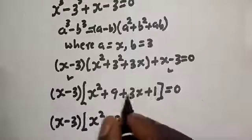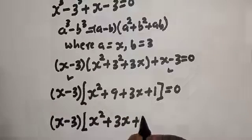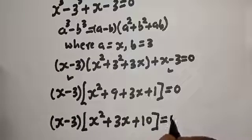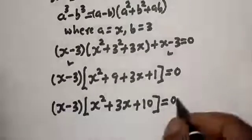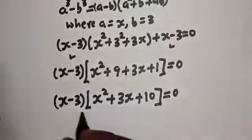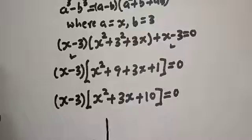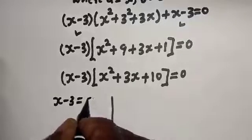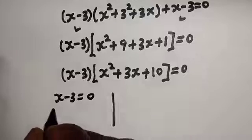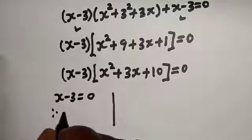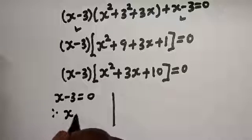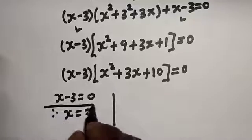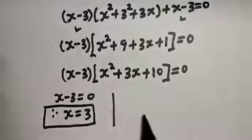This gives us s minus 3, bracket s squared plus 3s plus 10, equals zero. There are two cases. The first case is s minus 3 equals zero, therefore s is equal to 3. This is the first value of s.